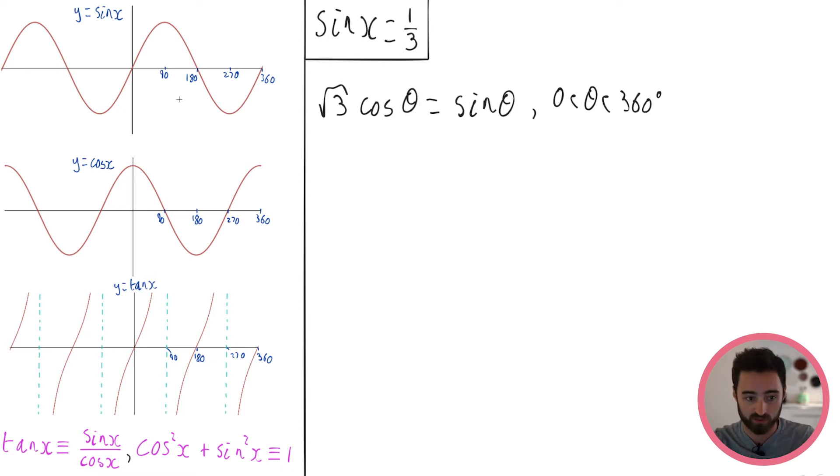Sine has a period of 360 degrees which means it repeats itself every 360 degrees. If you look at 360 it then starts again. Same with cos has a period of 360 and in fact it's actually just sine but shifted by 90 degrees. It's exactly the same thing just starts in a different place.